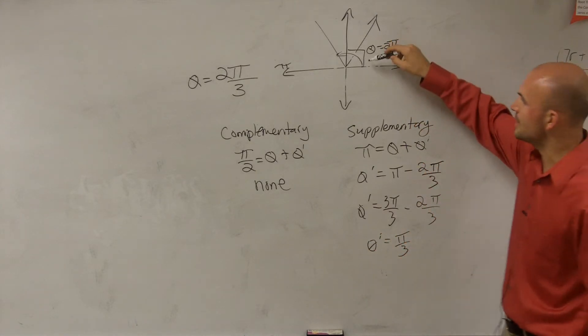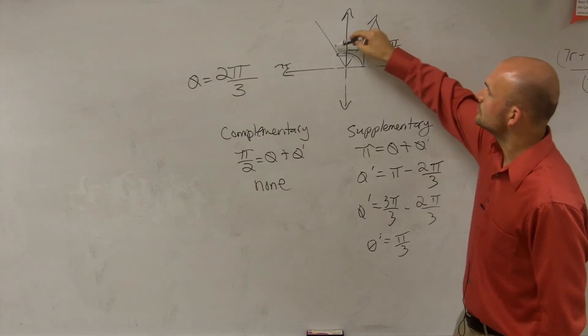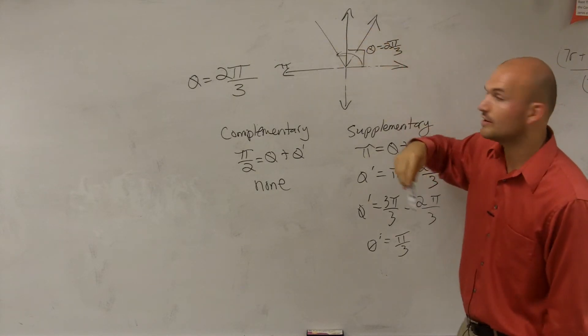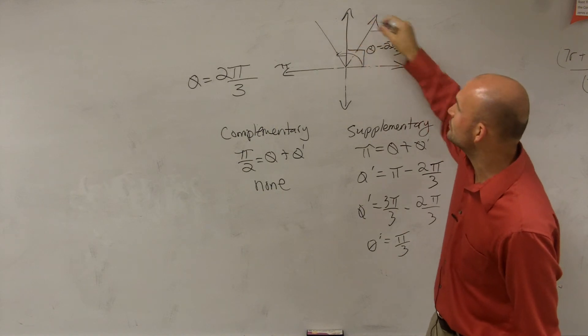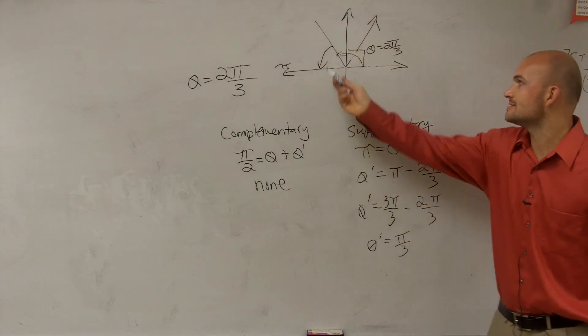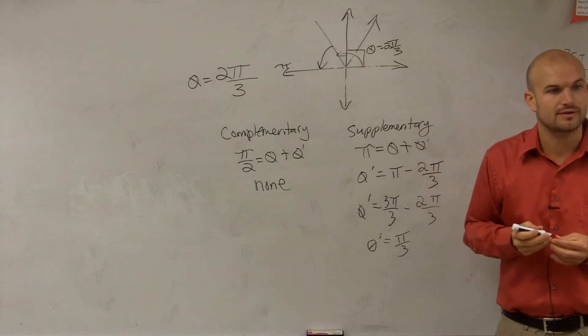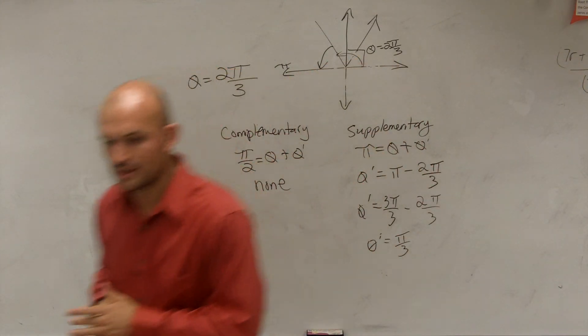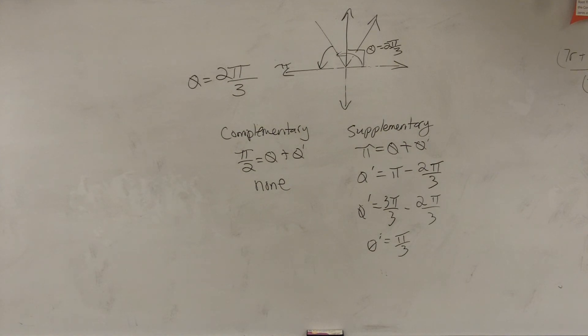And you guys could also look at that and say, if here's 1π over 3, 2π over 3, 3π over 3, so if here's my angle, what angle do I need to add to 2π over 3 to get it to equal the π? Well, you guys can see that distance is only π over 3. So that's the way you can always just take a look and double check your answer to make sure it makes sense.